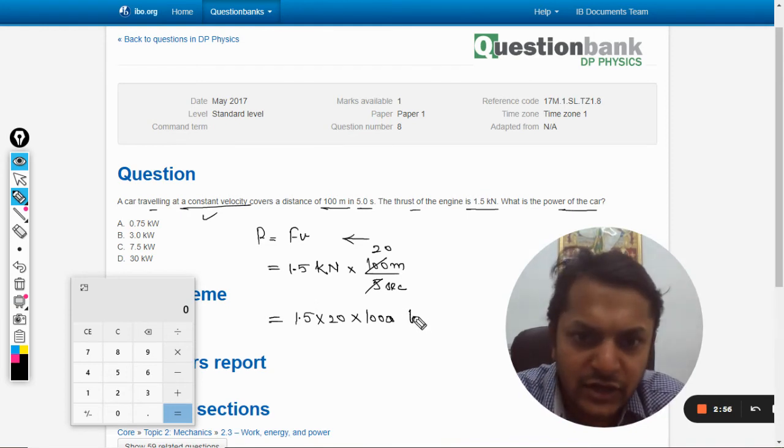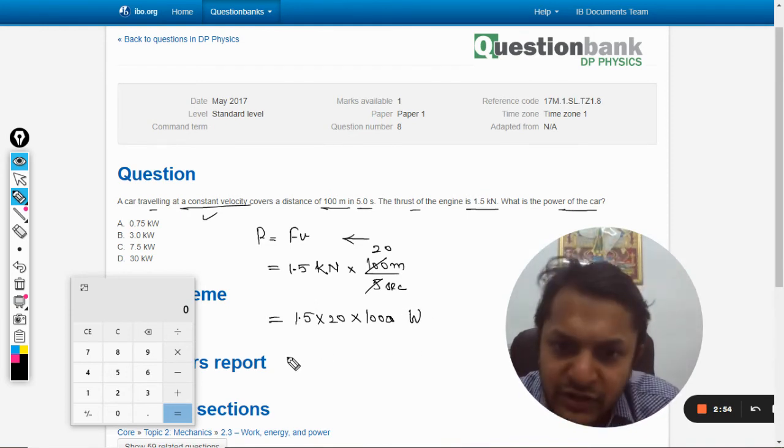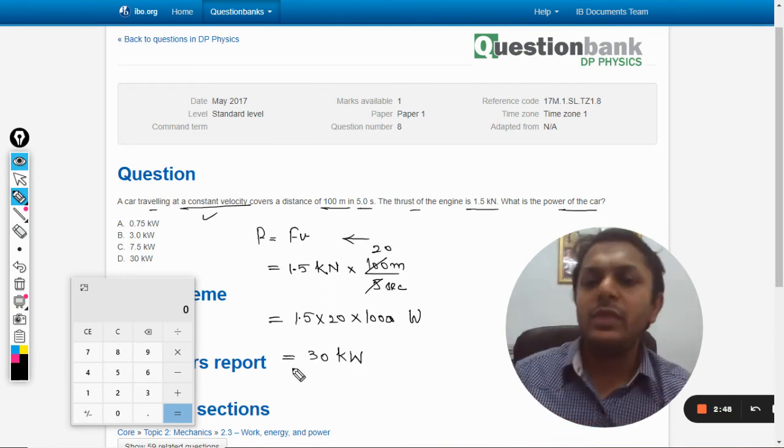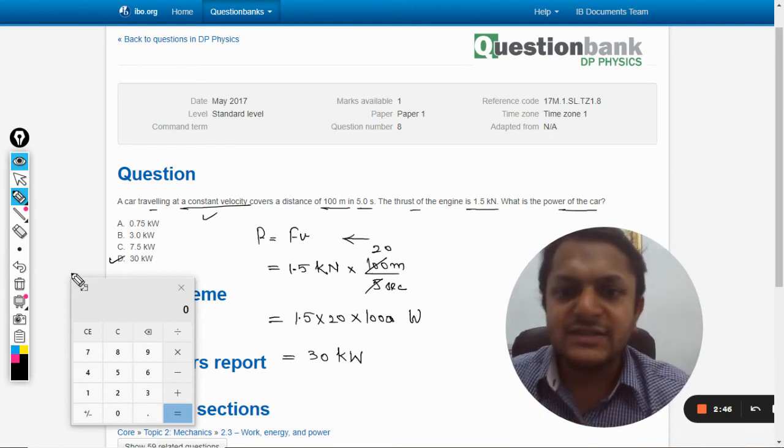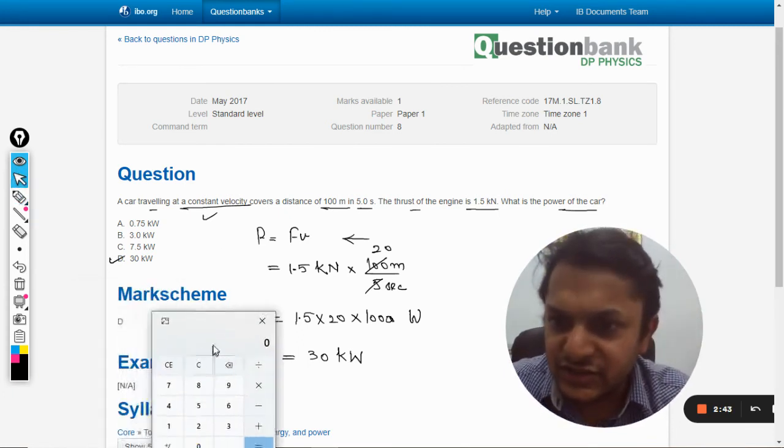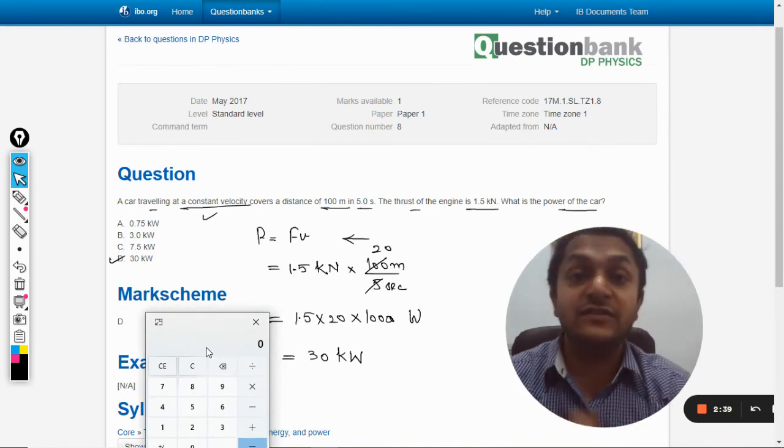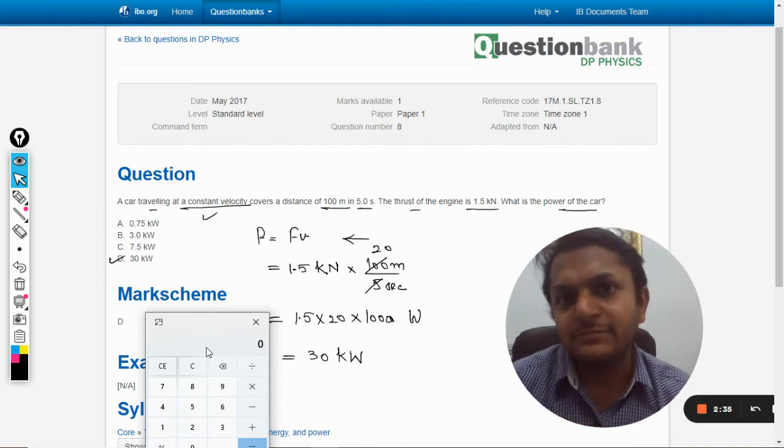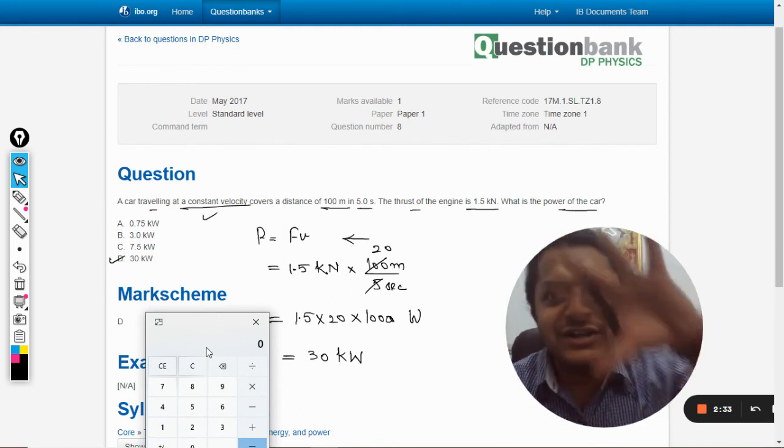And our answer should be in watts because we are talking about the power. So on calculating it, it is coming out to be 30 kilowatts. Yeah, so the answer is D. From this explanation, let us verify. Yes, the answer is D. There is nothing different about it. Whatever we have done is absolutely correct. With this, all the best, bye.